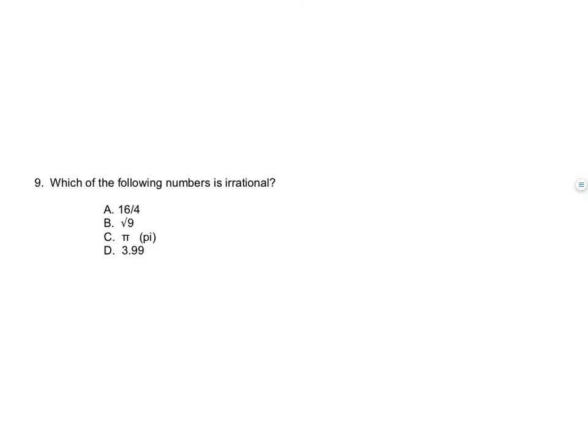Which of the following numbers is irrational? Irrational numbers cannot be made into a fraction and do not repeat. 16 over 4 is already a fraction — rational. The square root of 9 is 3, a whole number — rational. 3.99 stops and can be turned into a fraction — rational. The only answer is C, pi, because it never repeats.